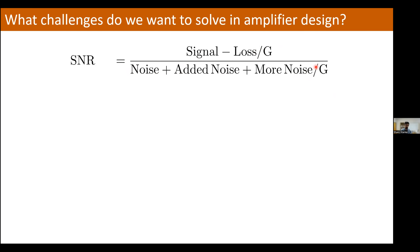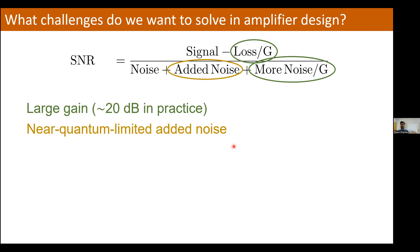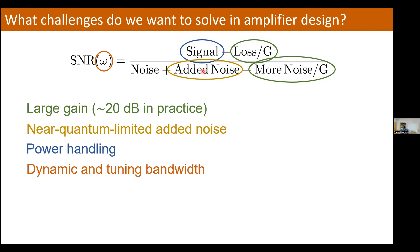To maximize SNR we want large gain — typically about 20 dB — to suppress the effect of extra noise and losses, and we want nearly quantum-limited added noise, as close to half a photon as possible. In addition, practically for using this in readout of quantum processors, we want to be able to handle as large an input signal as possible so we can measure many qubits in parallel. We also want this function to hold over as large a bandwidth as possible — both the dynamic bandwidth of the amplifier and how far we can tune the amplifier across some frequency range.